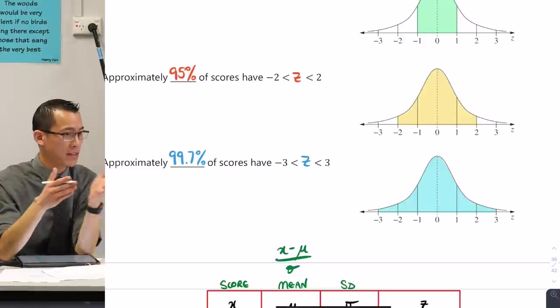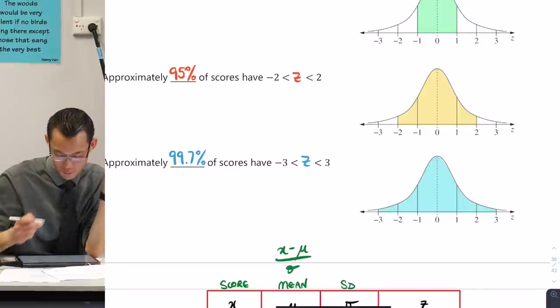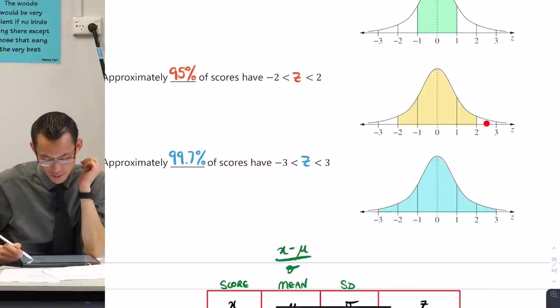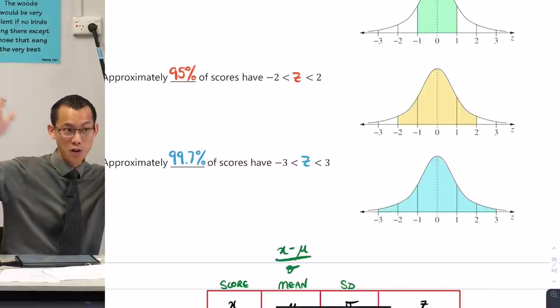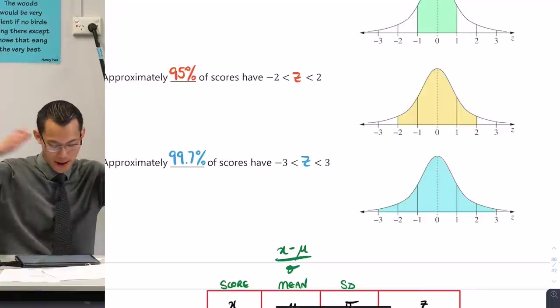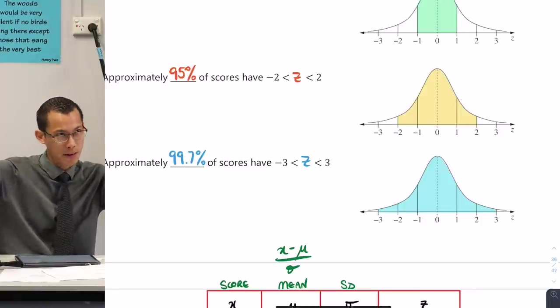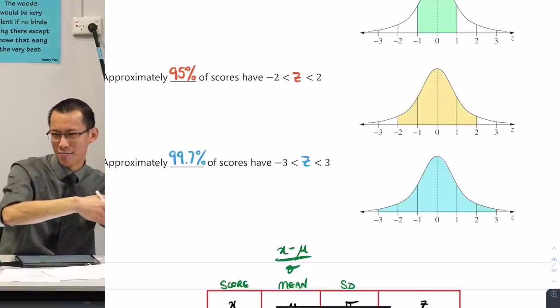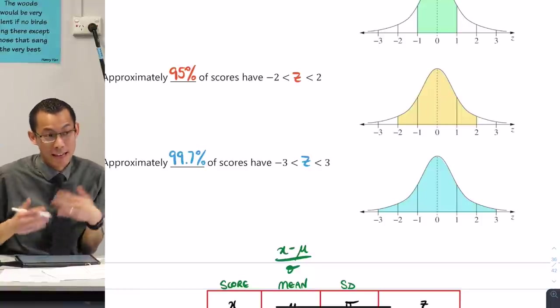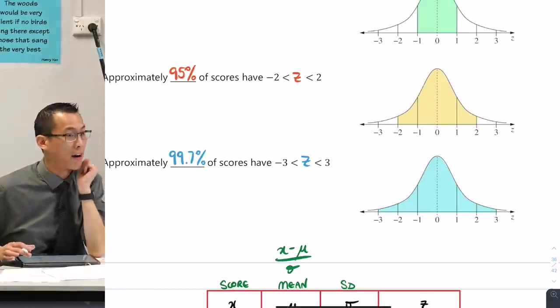If you go one more standard deviation out, so your z-score is between negative 3 and 3, this captures 99.7%, which sounds like a very funny number, I know, but it comes from the actual equation of the normal distribution. So that's between z-scores negative 3 and 3. So you can see, for that score of science, you know, I told you you had a z-score of 2.5. So you're somewhere around here. So you're, you know, you're better than 95% of that middle population, in fact, better than more than that, but you're not better than 99.7. So you can see, that's, you have to be really far up above to get a score that high.